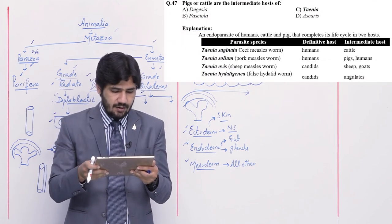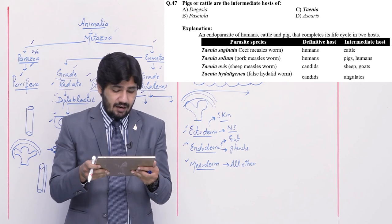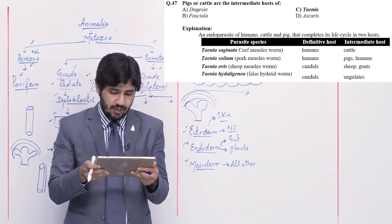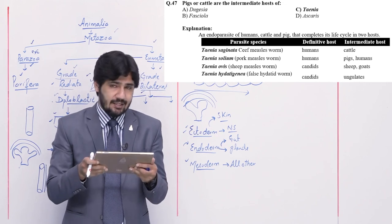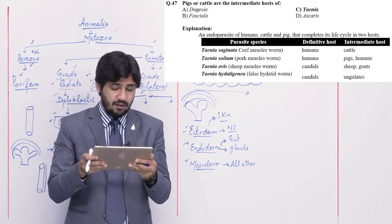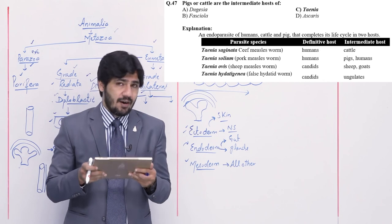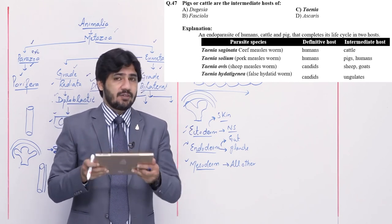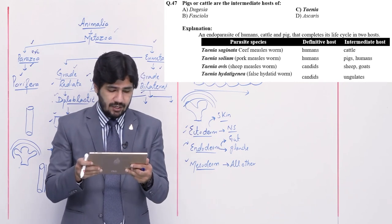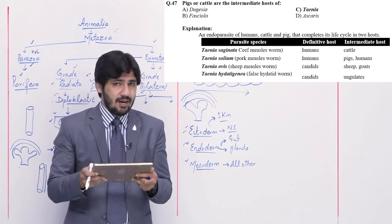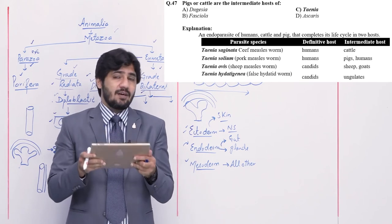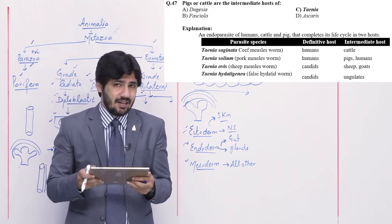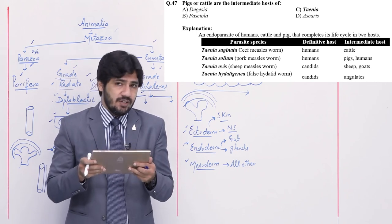Question number 47: pigs or cattle are the intermediate hosts of — alpha Dugesia, beta Fasciola, charlie Taenia, and delta Ascaris. The intermediate host is pig or cattle for tapeworm — Taenia solium. Right option is charlie. Dugesia is free living. Fasciola hepatica has humans and snails as hosts. Ascaris is a parasite of human intestine.